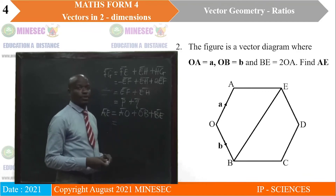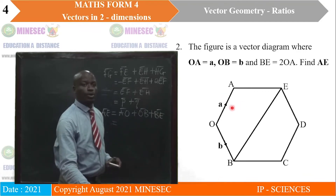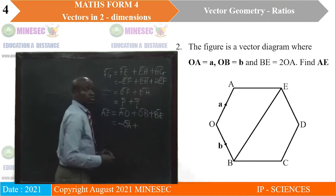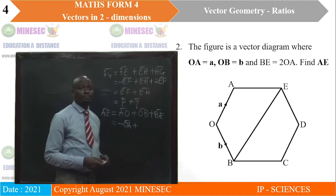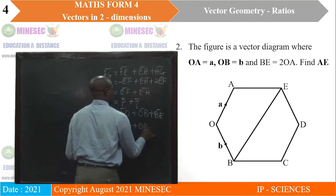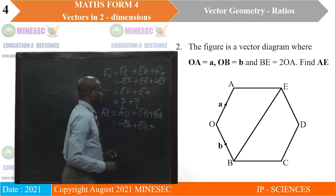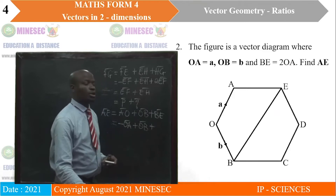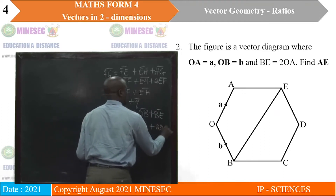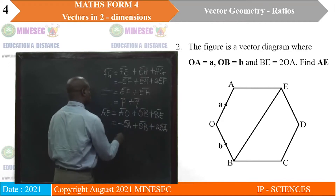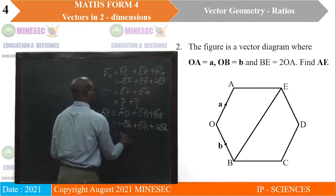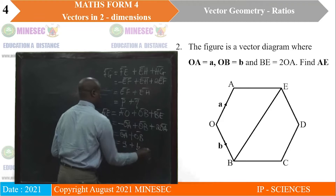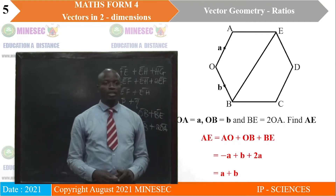Vector AO is against the arrow, so we reverse it by saying negative OA plus vector OB — that one is in the direction of OB — then plus BE. Now BE, we are told, is 2OA. So we replace that with 2OA as a vector. When we simplify this, we have vector OA plus vector OB. OA is small a, plus OB which is b. So we end up with AE equal to a plus b.